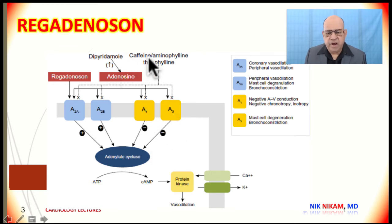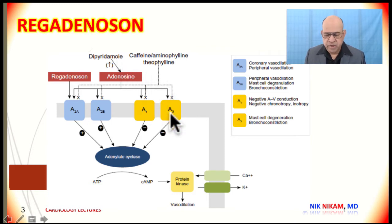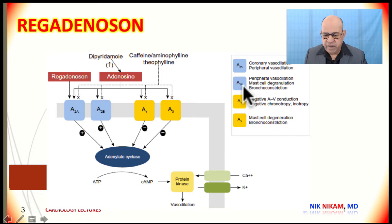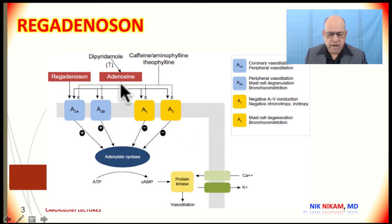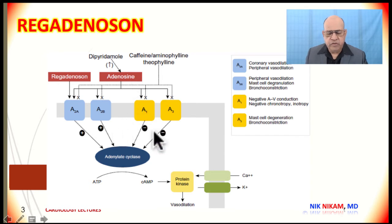Caffeine and aminophylline block the effect of adenosine and dipyridamole on receptors. Adenosine 3 receptors cause bronchoconstriction, and similarly adenosine 2B causes bronchoconstriction, so adenosine was prone to causing bronchospasm.